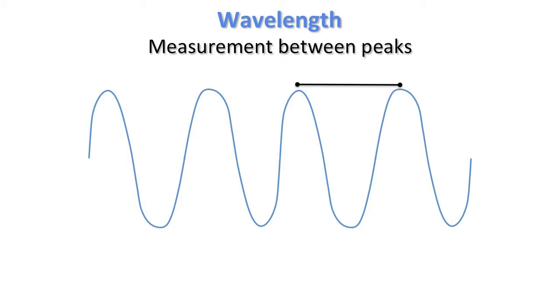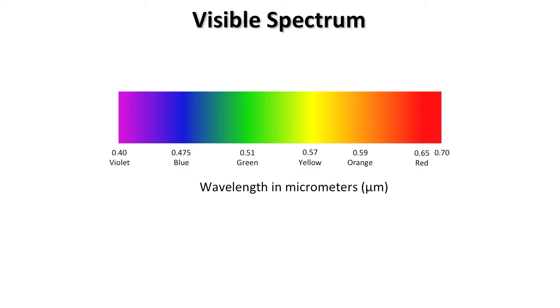Now of course what we see whenever we use our regular digital handheld camera, which we're recording with right now, are the visible wavelengths. Red through green through blue. Our ROYGBIV: red, orange, yellow, green, blue, indigo, and violet. Now violet of course being our shorter wavelength going out to our longer wavelength of red.